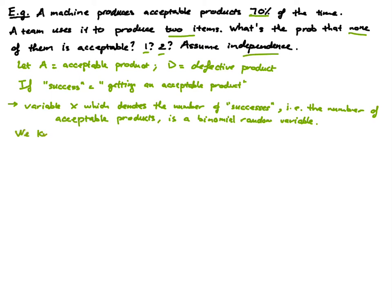From this problem, we know that this is a binomial experiment with N equals 2 trials. The probability of success is 70%, which is equal to 0.7. We want to find the probability that X is 0, the probability that X is 1, and the probability that X is 2.